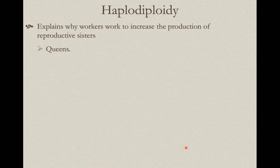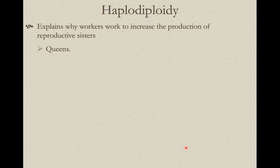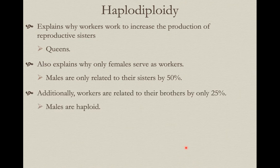This explains why workers work hard to help mom produce more sisters — specifically reproductive sisters, future queens. Producing additional workers is just a means to an end. This system also explains why only females serve as workers: they're the only ones that have this extra genetic potential by serving as a worker. Males are only related to their sisters by 50% — the normal amount — and workers really want to produce reproductive sisters.